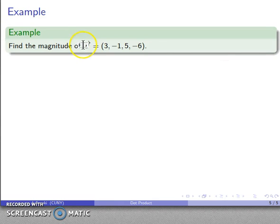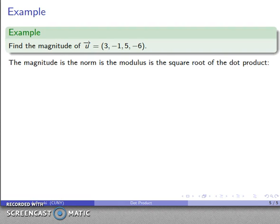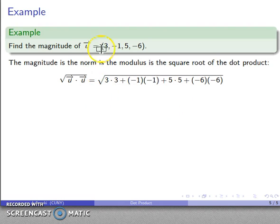Alright, so let's take a quick example here. Say I want to find the magnitude of the vector u = (3, -1, 5, -6). Well, the magnitude is the norm, is the modulus, is the square root of the dot product. So I'll find that dot product. So that's going to be the first component of u, 3, times the first component of u, also 3, that's 3 times 3. Second component of u times the second component of u, third component times the third component, fourth component times the fourth component. And so I add those together, and after all the dust settles, I get the magnitude square root 71.